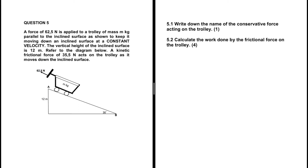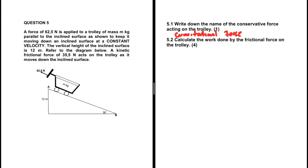Write down the name of the conservative force acting on the trolley. Even without looking at the actual situation, we know that gravitational force acts on any object near the surface of the Earth, and gravitational force is a conservative force. So the answer to 5.1 is gravitational force. It is independent of the path taken — the work done by gravitational force is independent of the path taken.